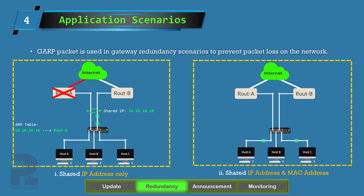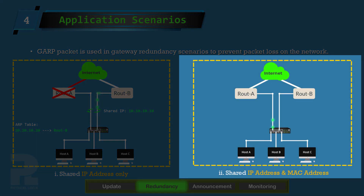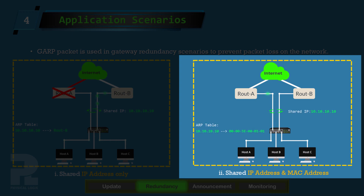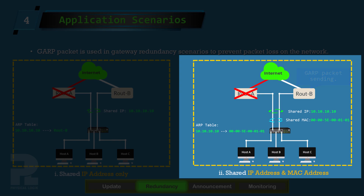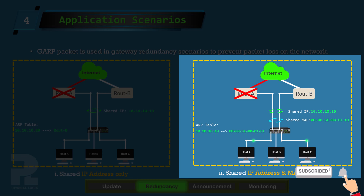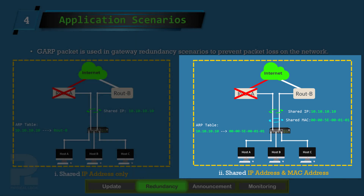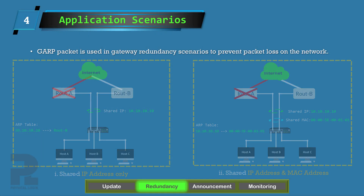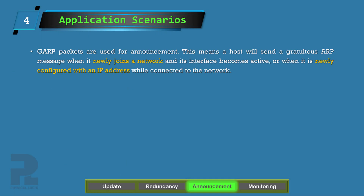The second topology describes a scenario where both routers share the same IP address and hardware address. The broadcast of a Gratuitous ARP message for updating ARP entries does not apply here. It is only necessary to enable the switch itself to update its MAC address table to avoid forwarding data frames out the wrong port.